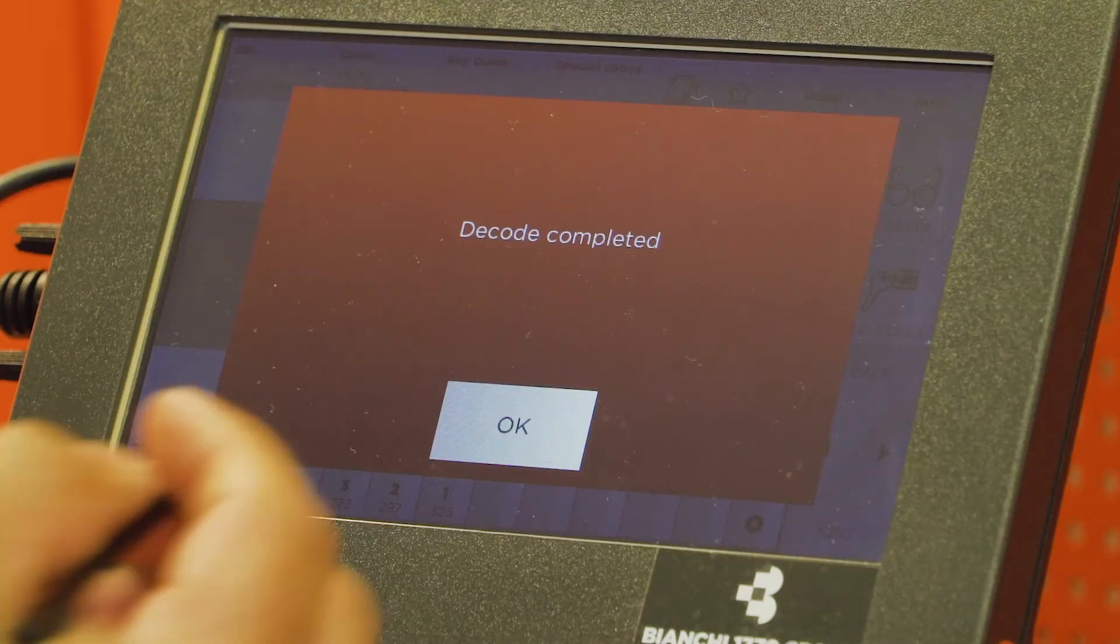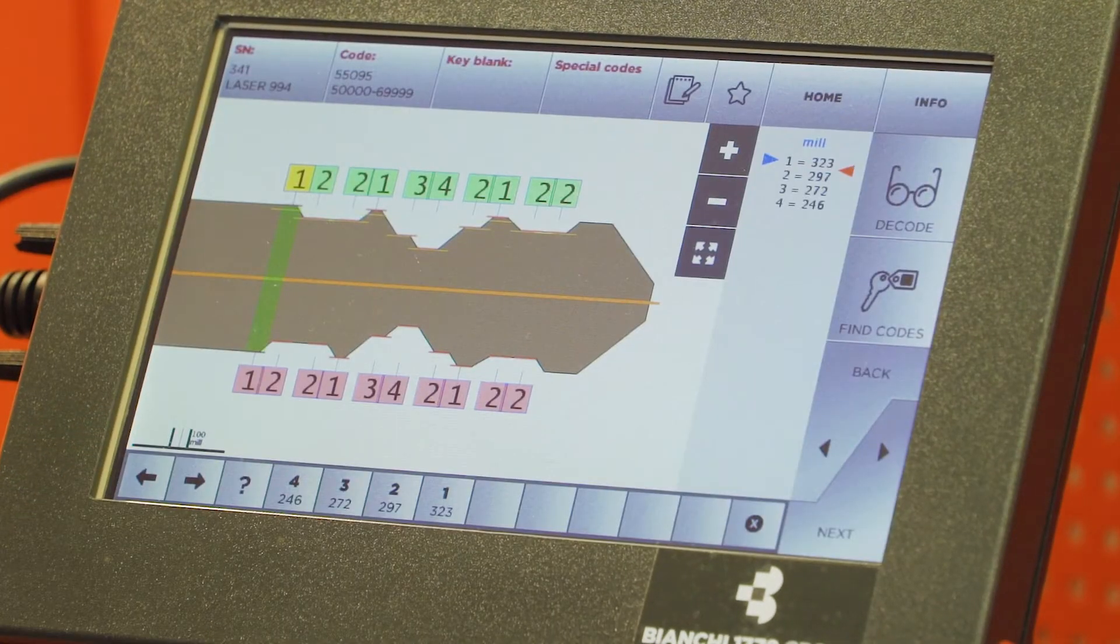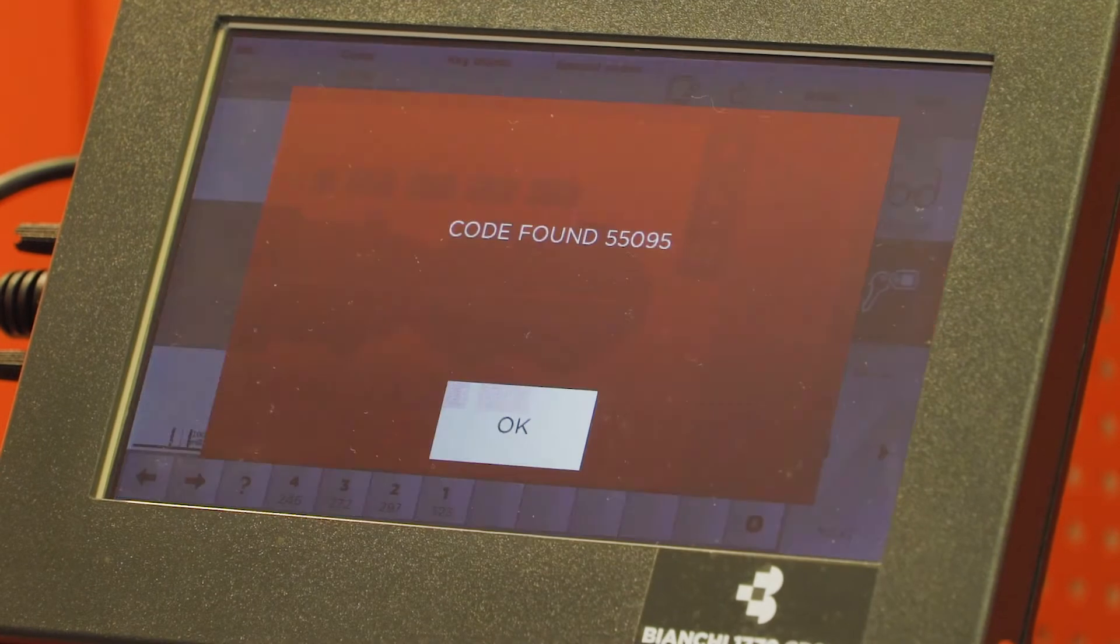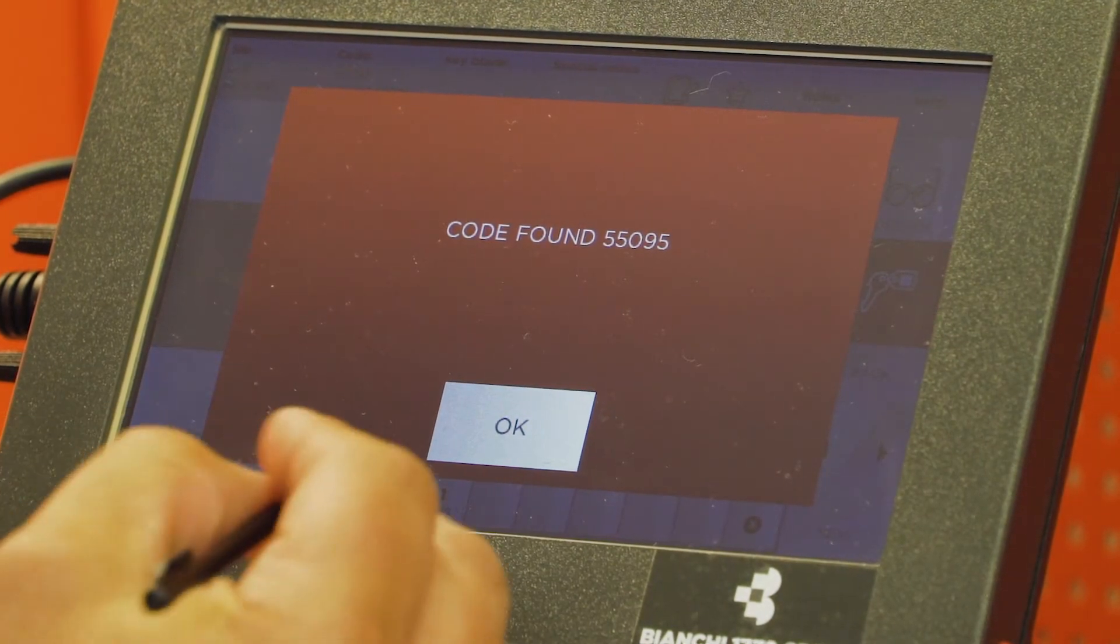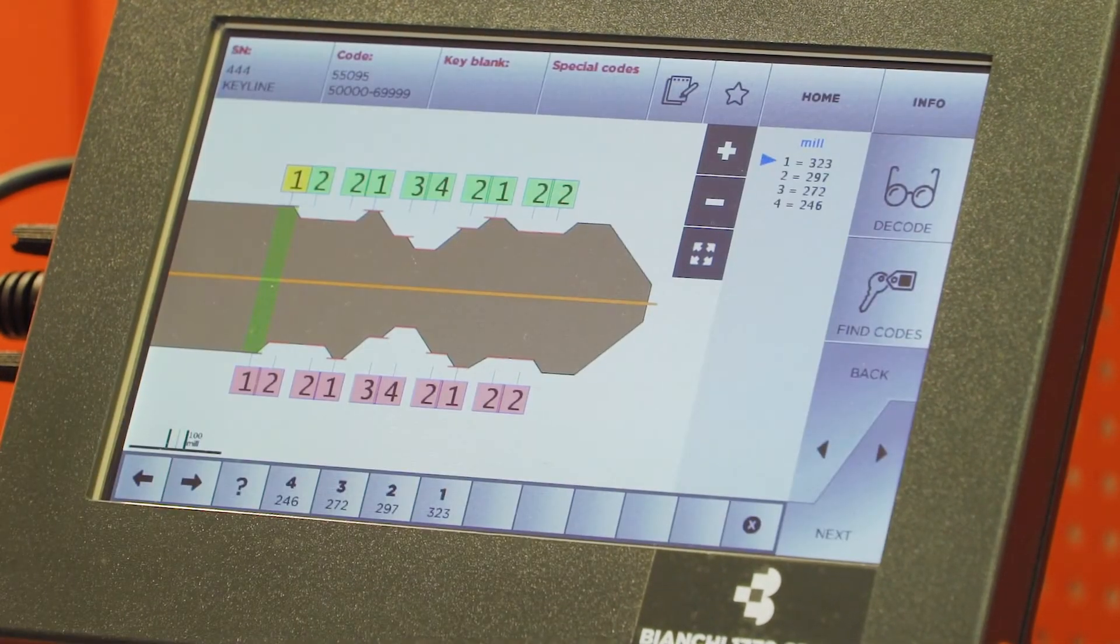Once the procedure is complete, select OK, and find codes. Once your key code is found, select OK, followed by next.